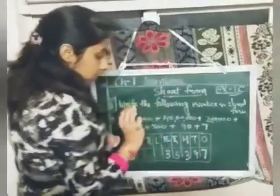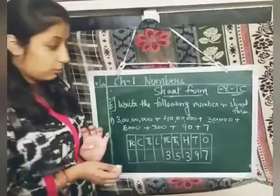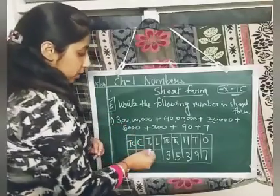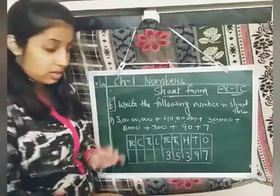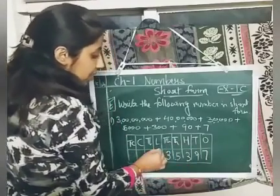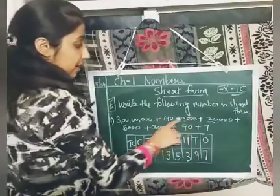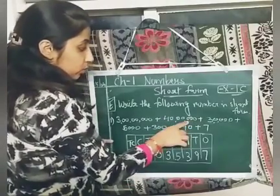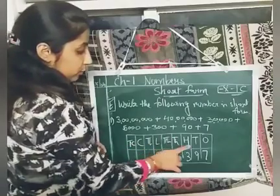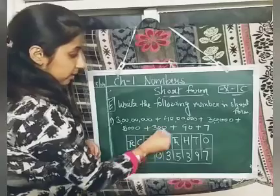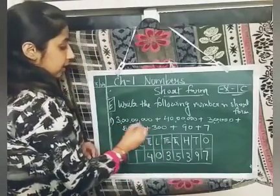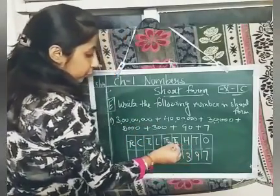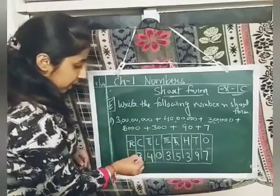Now 40 lakh — just count the zeros: 1, 2, 3, 4, 5, 6. Six zeros come in ten lakh, and in lakh five zeros come. So I will write 0 in the lakh place. Then in ten lakh, six zeros, so 4 will come at ten lakh place. Then counting seven zeros — 3 crore. So I will write 3 here.